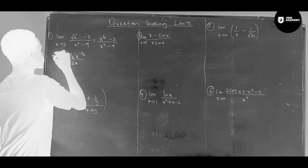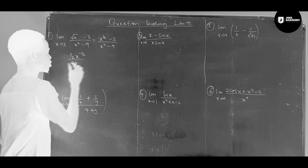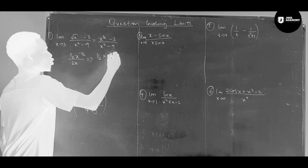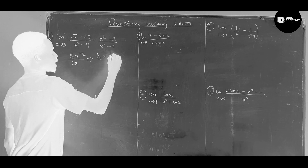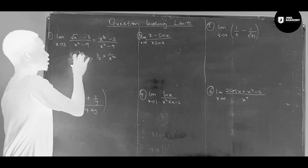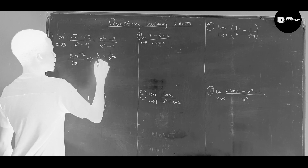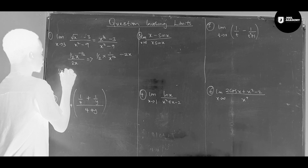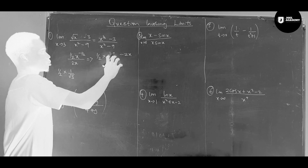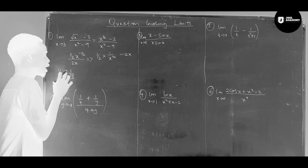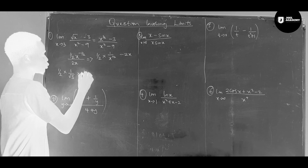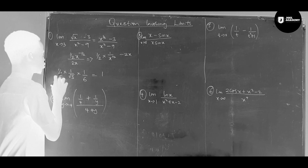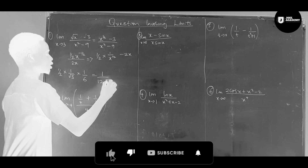We can now substitute the value of x equals 3 into this expression. We have 1 over 2 times x to the power 1/2 in the numerator, evaluated at x equals 3. Since x to the 1/2 at x equals 3 is the square root of 3, which equals 3, substituting gives 1 over 2 times 3, which equals 1 over 6. So the answer is 1 over 12.